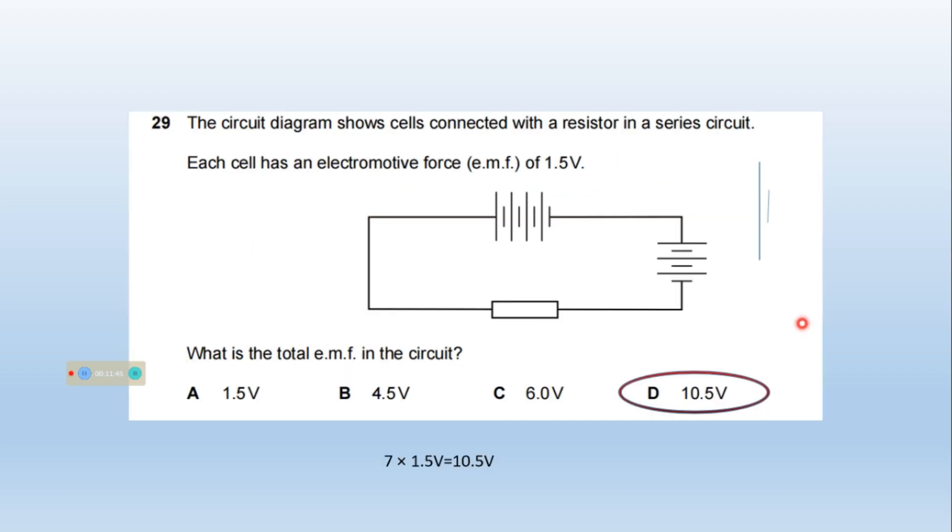The circuit diagram shows cells connected with a resistor in series. Each cell has an electromotive force EMF of 1.5 volt. What is the total EMF in the circuit? So cells terminal is a positive and negative terminal of the cell. So there are 1, 2, 3, 4, 4 cells and 5, 6, 7. Total 7 cells are connected in series. 7 multiplied by 1.5, 10.5. Option D is right.